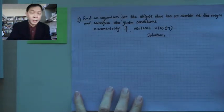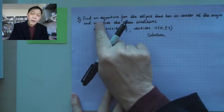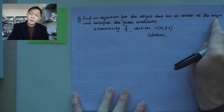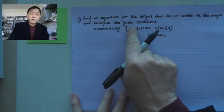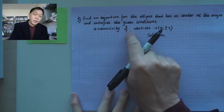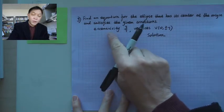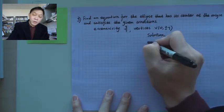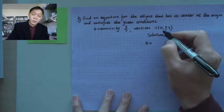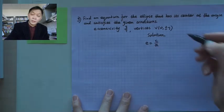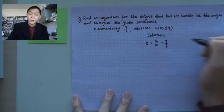This was Example F. Now let's look at Example G: find the equation of the ellipse that has a center at the origin — so no shifting in this case — and satisfies the given condition that eccentricity is 3 over 7. Eccentricity by definition is e equals c over a, so c over a equals 3 over 7.